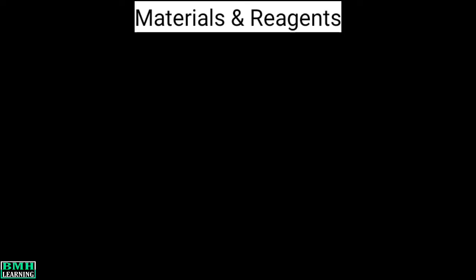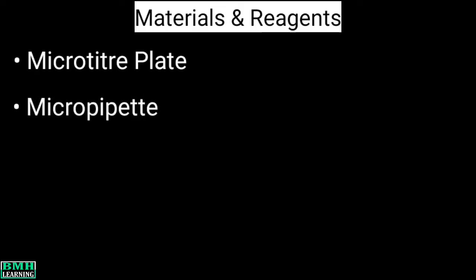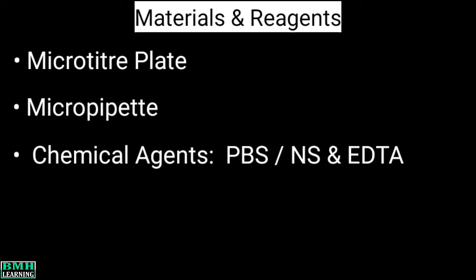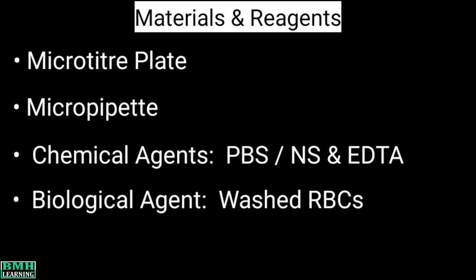Now we move to the experimental part. First, let's talk about the materials needed. We need a microtiter plate, and to transfer chemicals in accurate volumes, a well-functioning micropipette. Chemical agents such as phosphate-buffered saline, normal saline, and EDTA are required.